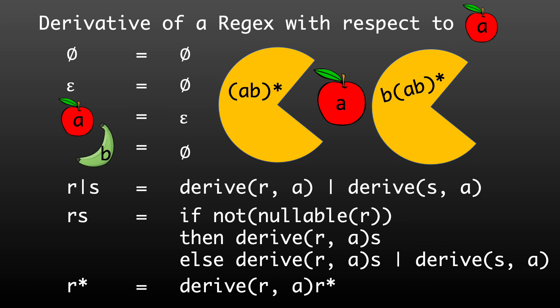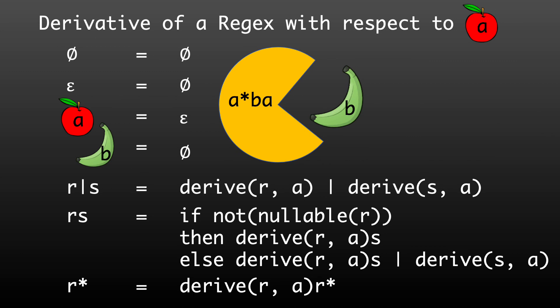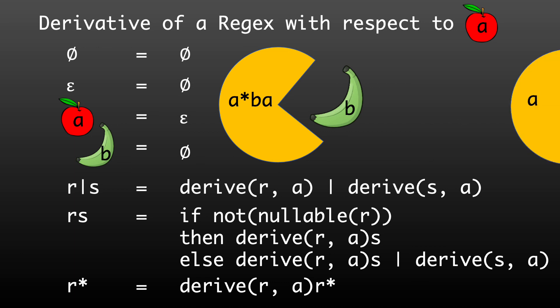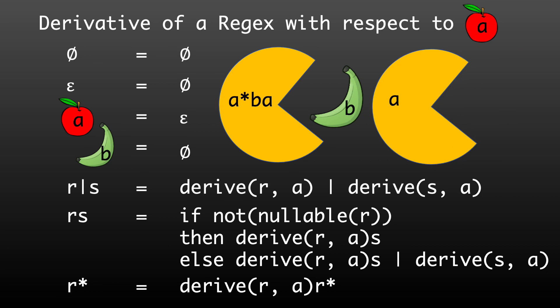I'll leave you with one final example — and this is kind of an exercise because of the amount of detail I'm going to skip over. Let's take the derivative of A star BA with respect to B. A star is concatenated with BA, so we use the concatenation rule. A star is nullable, which means we can skip over it but must create two alternatives. The left side doesn't match since A star doesn't match B. Luckily we have the alternative — the right side BA — and the derivative of BA with respect to B is A. So we end up with just A. Please go check my work and walk through the function yourself.